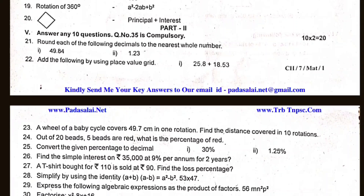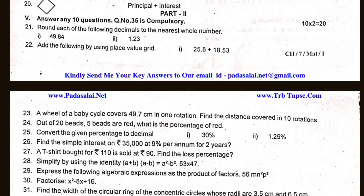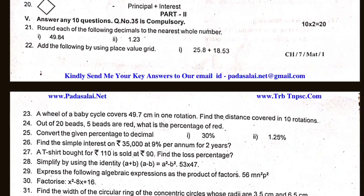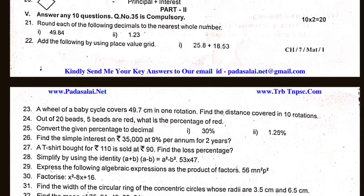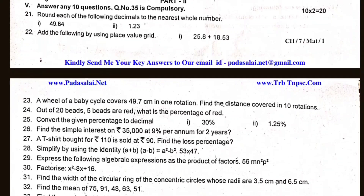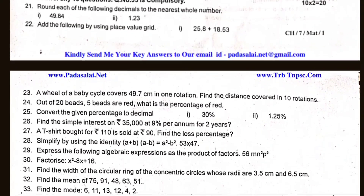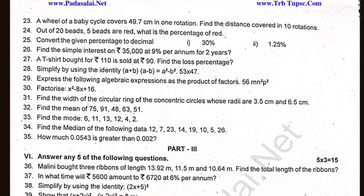The whole number: 49.84, 1.23. Add the following by using place value. You can check it out and see that when you have it in place, the total is 15.